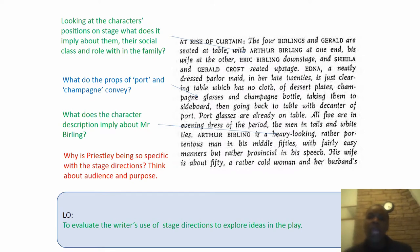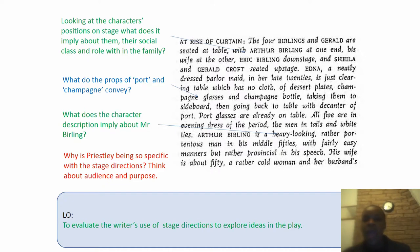Then we hear the description of the family within the house — what it implies about them, their social class and role within the family. We've spoken about them being wealthy already. He also uses the props of port and champagne, which at that time were expensive alcoholic beverages. Why does he use those as props? What does the character description imply about Mr. Birling? Why is Priestley being so specific with the stage directions? Think about the audience and the purpose — this play makes social commentary about what was happening at the time, and Priestley wanted a change in the ideologies of the wealthy and a change in the class divisions.